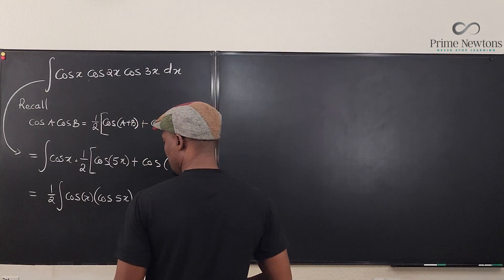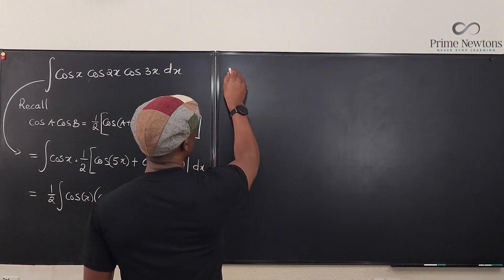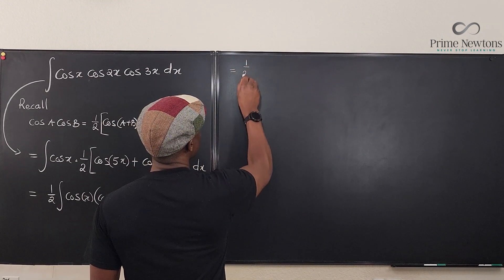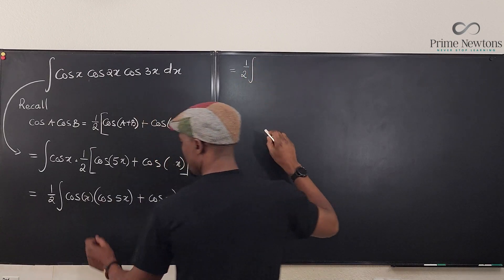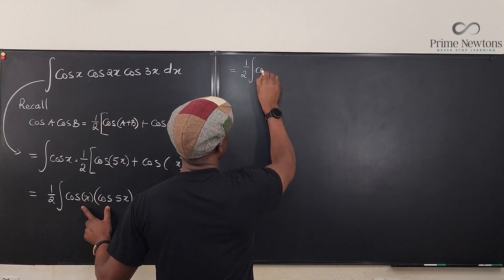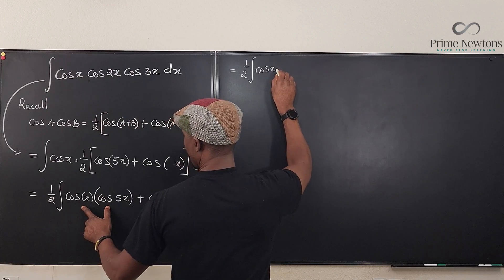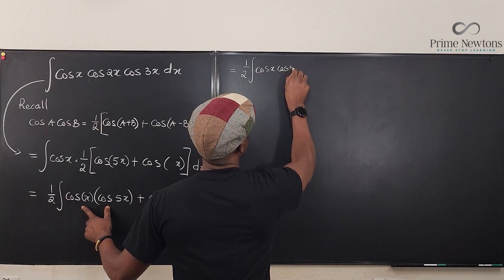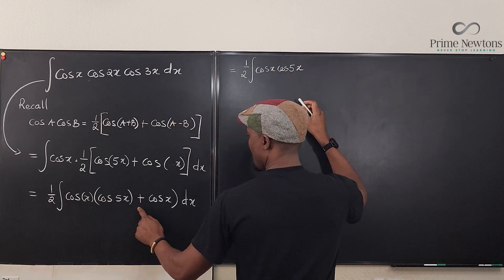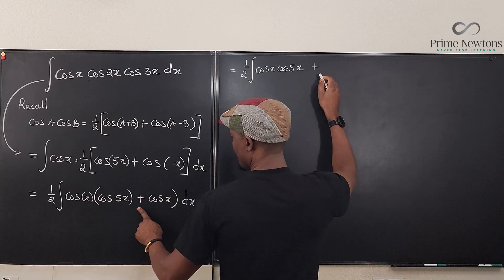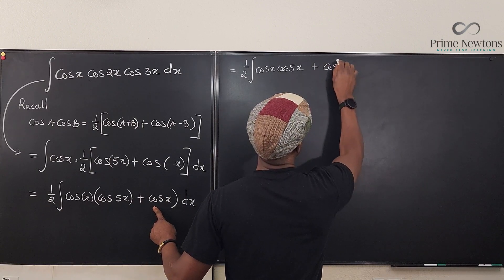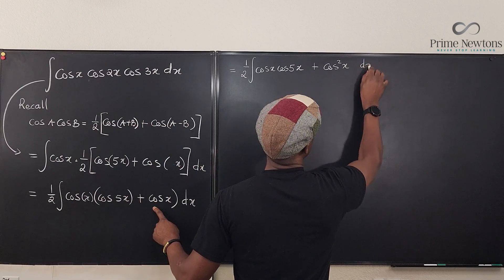So if we do one more step of this, what do we get? This is going to be equal to one half times the integral. If I distribute this, it's going to be cosine x cosine 5x plus this is going to be cosine squared x dx.